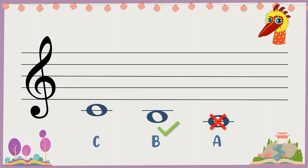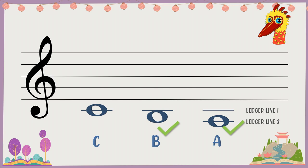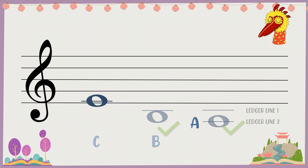It's confusing and it's wrong. To make it A, you need two ledger lines. Like this. This is correct. Let's try reading the ones above the stave.